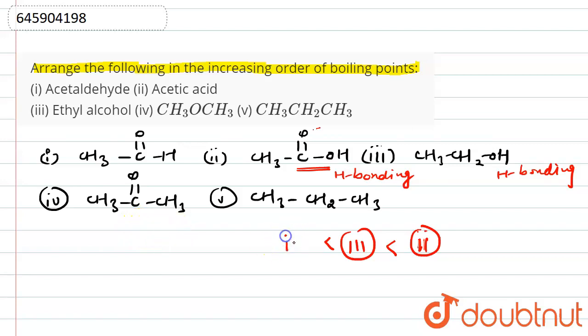So after that we will have fourth, and then we will have first, and finally the least, that is fifth. So this is the increasing order of the boiling point. I hope you understand this concept, thank you.